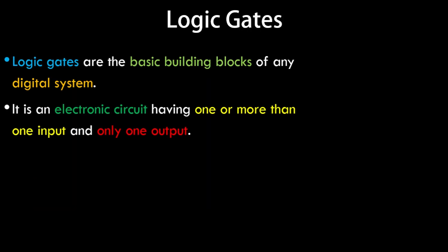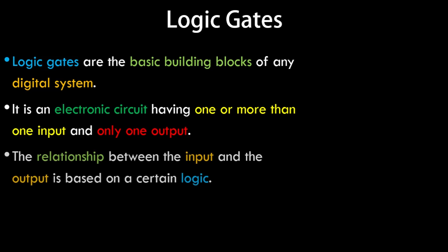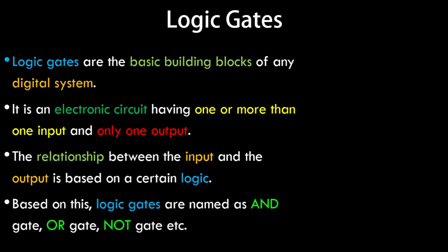Logic gates are basic building blocks of any digital system or circuit. They are basically digital circuits or electronic circuits which have one or more inputs but only one output. There is a certain relationship between the input and output, and depending on that we categorize them into types of logic gates.